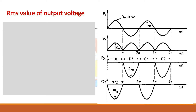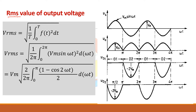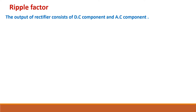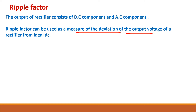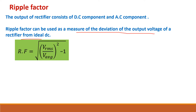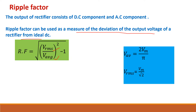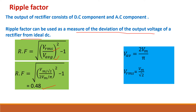Now we find the RMS value — root mean square value. We square the voltage, find the mean, and take the square root. Applying the limits 0 to pi and multiplying by 2, we get Vrms = Vm/√2. Next, the ripple factor gives the measure of how much the output voltage waveform deviates from the ideal DC waveform. Using the standard formula with the Vrms and V_average already found, we get a ripple factor of 0.48. In the half wave rectifier it was around 1.21, so ripple is much lower in the full wave rectifier.